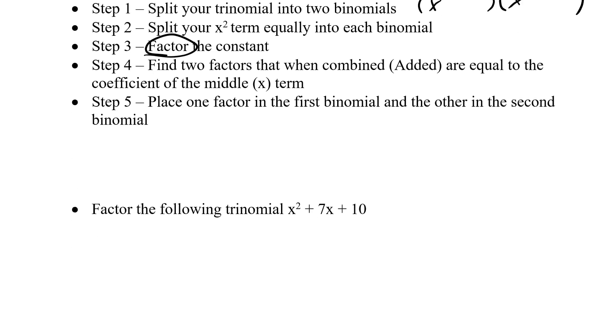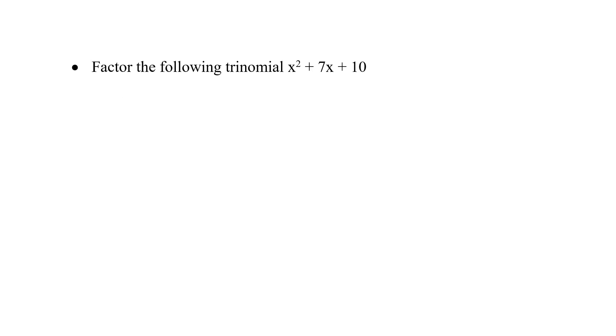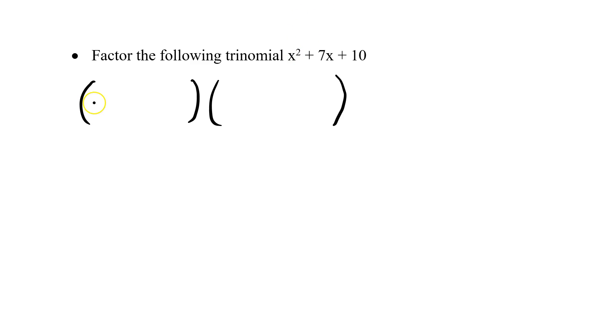So let's take a look at what this actually looks like when we do it. Factor the following trinomial x squared plus 7x plus 10. So step one is to open up two sets of brackets and we'll act as our answer. We take the first squared term in this case it's an x and we put 1x in the front, 1x in the second one.